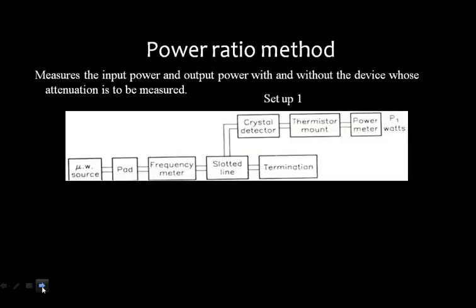In setup one, you have a microwave source, pad, frequency meter, slotted line, connected to a matched termination, then a crystal detector, thermistor mount, and a power meter recording P1. If you are using the thermistor connected to the power meter, you measure the power and note it as P1.